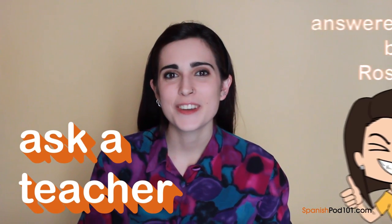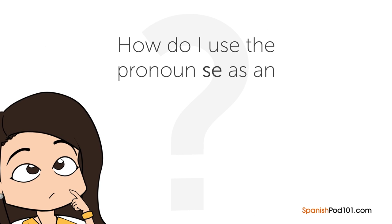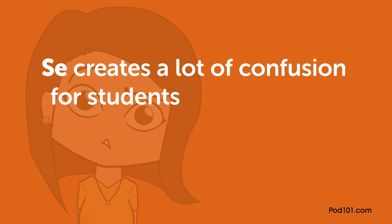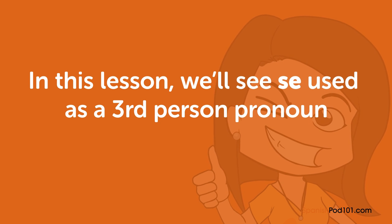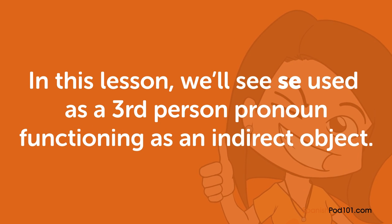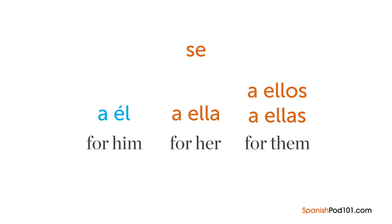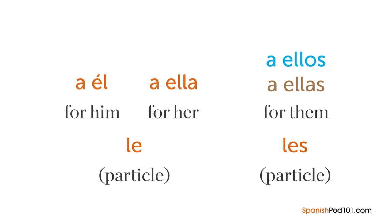Hi everybody, Rosa here. Welcome to Ask a Teacher, where I'll answer some of your most common Spanish questions. The question for this lesson is: how do I use the pronoun SE as an indirect object? SE creates a lot of confusion for students because there are several uses and functions for SE in Spanish. In this lesson, we'll see SE used as a third person pronoun functioning as an indirect object — meaning we use SE when it means 'a él' or 'a ella' for him or for her, and 'a ellos' or 'a ellas' for them.